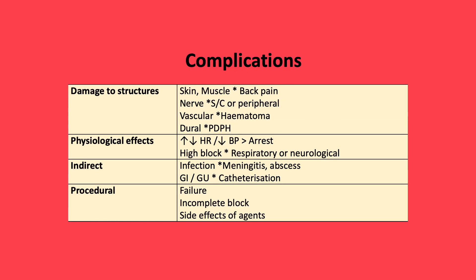Complications are broad and relate to four different subgroups. As the needle is inserted, there is a risk of damage to structures — these can be the skin and muscle causing back pain, but also more important structures including nerves and the vasculature, producing a haematoma that can result in spinal cord compression. A dural puncture will occur with a spinal needle; however, this can inadvertently occur with an epidural needle, resulting in a post-dural puncture headache. There is also a range of physiological effects which can cause hypotension, tachycardia, bradycardia, and respiratory and neurological complications. Indirect effects include infection and GI and GU complications. Also, the procedure may be difficult, requiring multiple attempts.